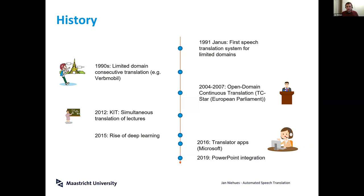Based on this, in the 1990s we saw quite some research groups working on that, with first systems for limited domains — for example only for tourists or only for medicine — which could do consecutive translations of one or two sentences.